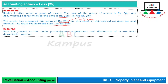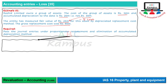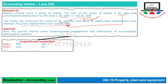Required है कि journal entries दोनों methods से pass करें। Proportionate restatement method में step one: asset की value 50 से 60 पर adjust करनी है, तो 10 million से debit। Step two: 5 million का loss debit। Step three: difference जो है वो accumulated depreciation account में जाएगा, that is 15 million - यह balancing figure है।